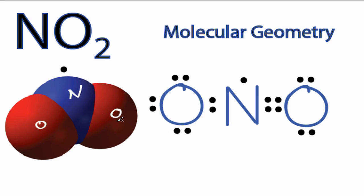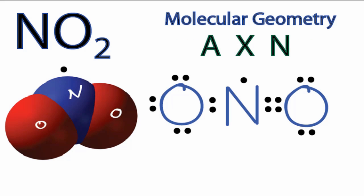We can also use the AXN notation to check the molecular geometry. A, that's the central nitrogen. X, that's the number of atoms attached to it. We have those two oxygens, and N, that's the number of lone pair electrons.